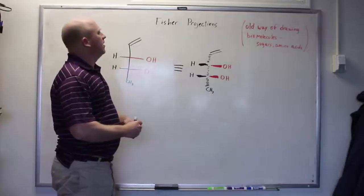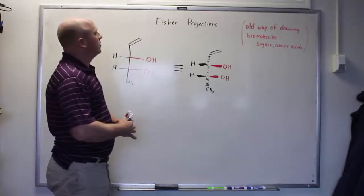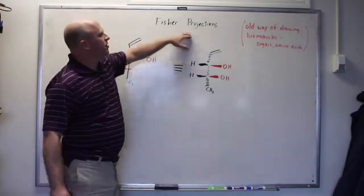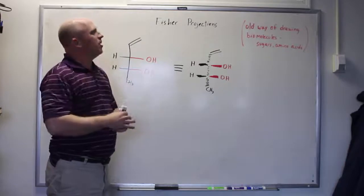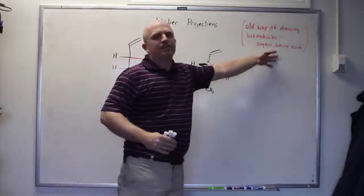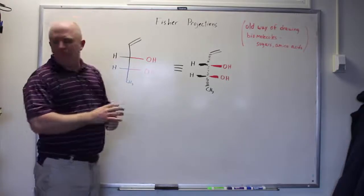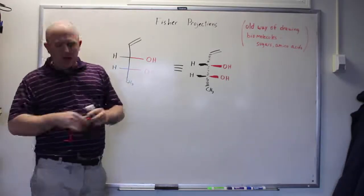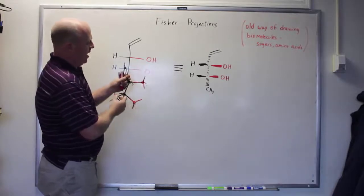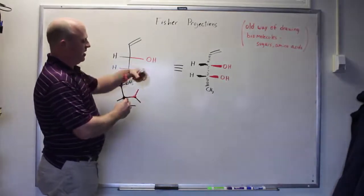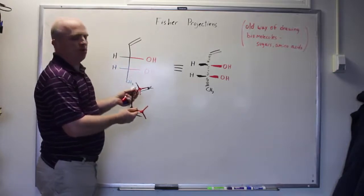To help compare pairs of molecules that might be diastereomers or enantiomers or identical, I wanted to use something known as Fischer projections. This is kind of an old-timey way of drawing biomolecules like sugars or amino acids. It's a little bit outdated, a little weird way of representing things, but I actually like it a fair bit because you have to figure out how to rotate molecules well in your head.